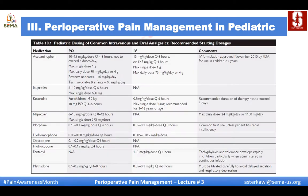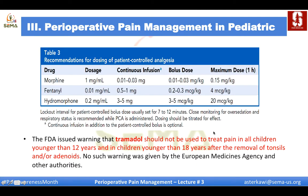A table summarizes commonly used pain medications in pediatrics with oral and IV doses, and another table summarizes doses for PCA use in pediatric patients. An important FDA warning in red states that tramadol should not be used to treat pain in all children younger than 12 years, and in children younger than 18 years after removal of tonsils and adenoids. However, as mentioned previously, no such warning was given by the European Medicines Agency or other countries.